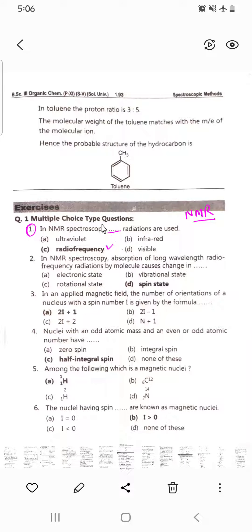Radio frequency radiations are used in NMR spectroscopy. Ultraviolet is used in UV, infrared is used in IR. So the correct answer is radio frequency. Second question: In NMR spectroscopy, absorption of long wavelength radio frequency radiations by a molecule causes the change in what?